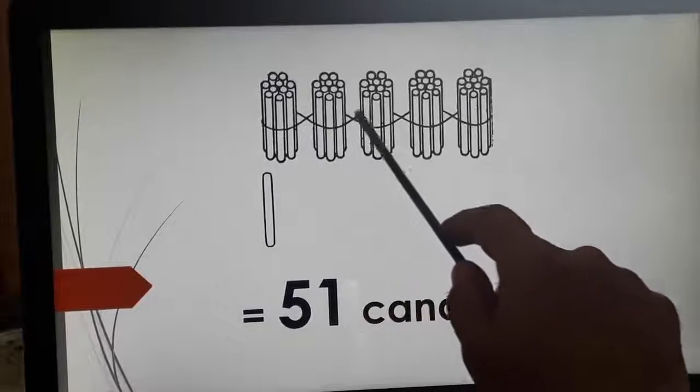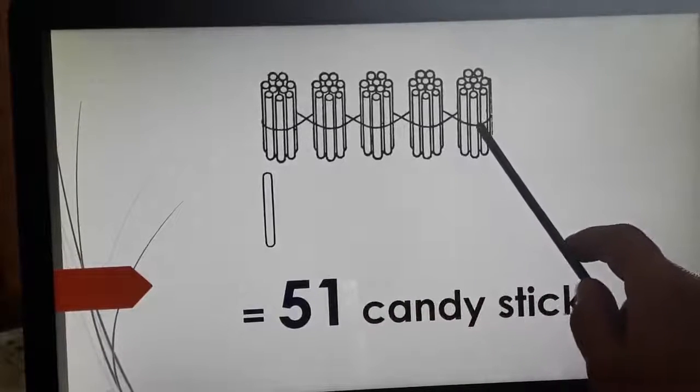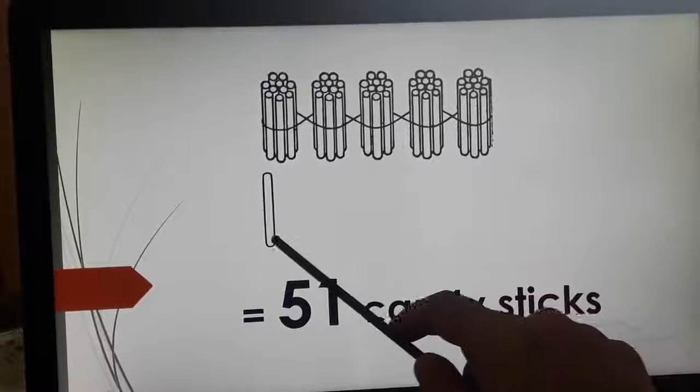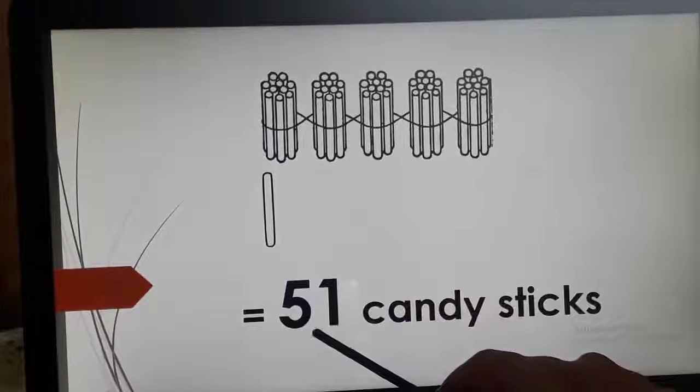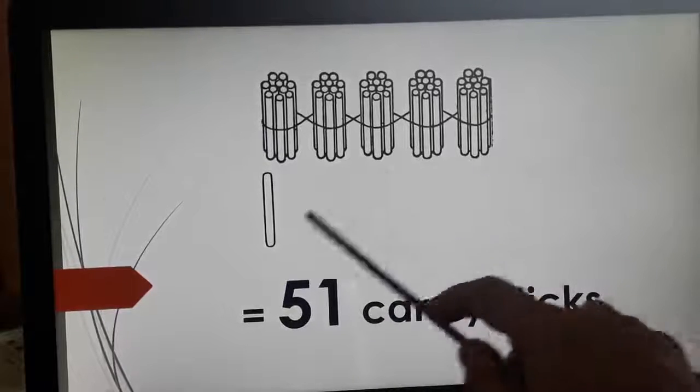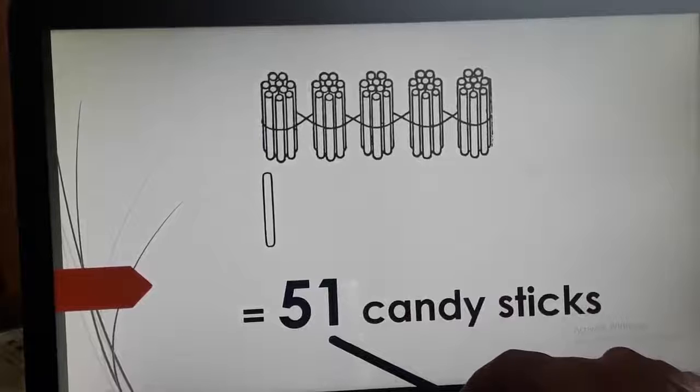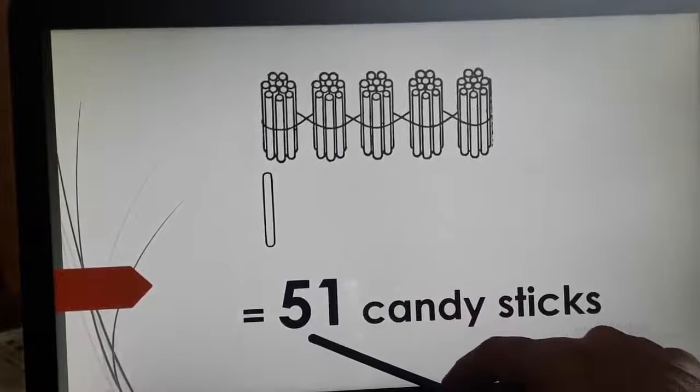So, now here 10, 20, 30, 40 and 50 candies and one more. So, 50 and one, 51. Once again, 50 and one, 51. So, here number 51.